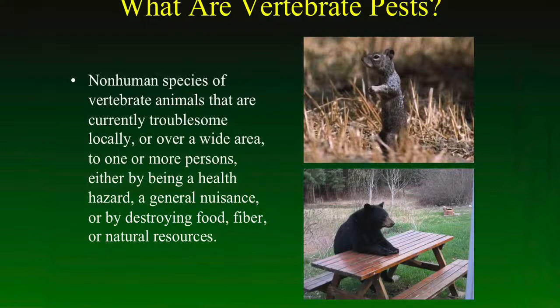I always like to first start off with these presentations by providing a basic definition of what a vertebrate pest species is. And this is one of the more common textbook definitions that you're likely to find. They are non-human species of vertebrate animals that are currently troublesome locally or over a wide area to one or more persons, either by being a health hazard, a general nuisance, or by destroying food, fiber, and natural resources.